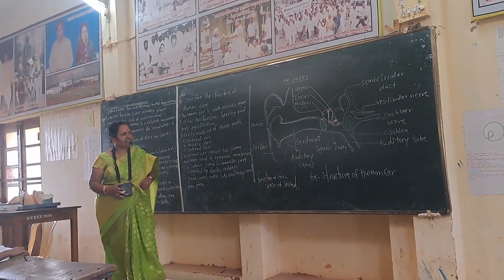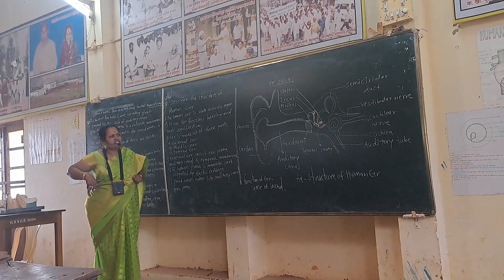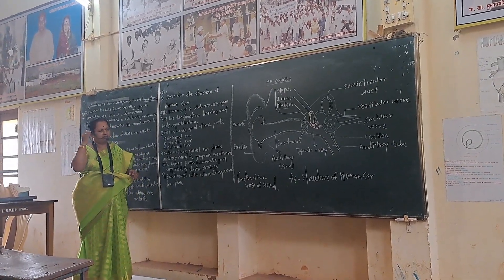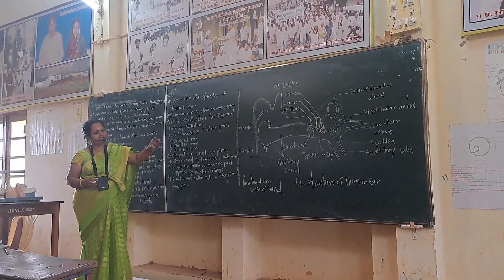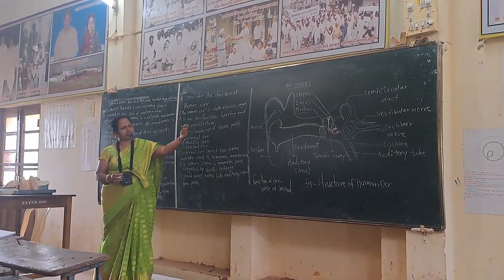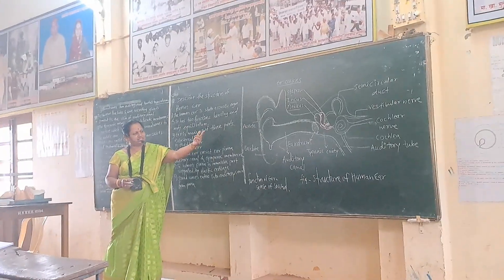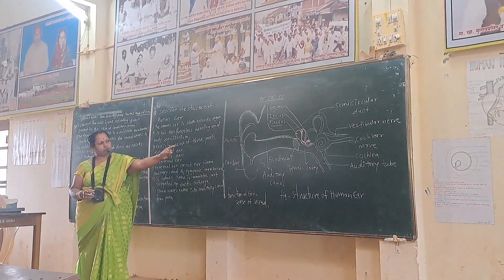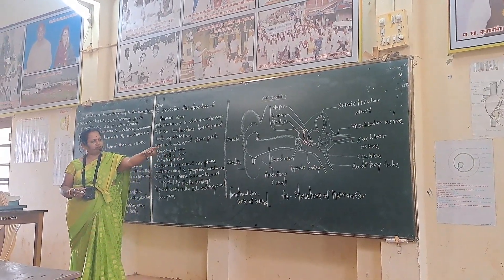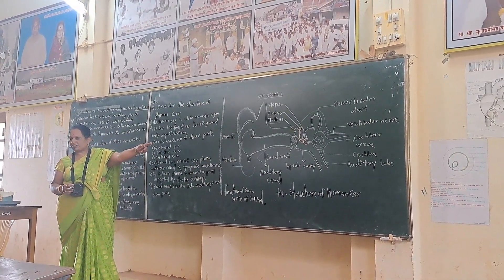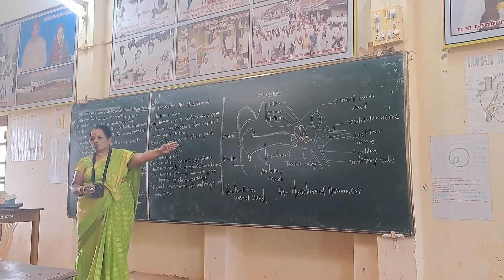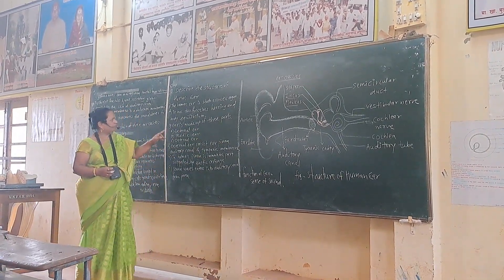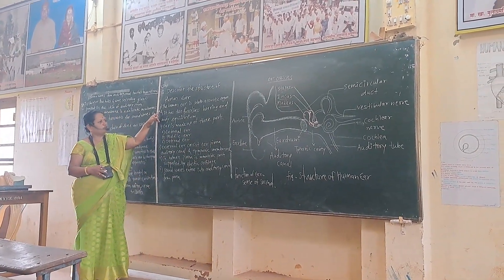The function of the ear is the sense of sound. Sound waves are collected first by the pinna of the external ear, then transported through the auditory canal, where the vibrations reach the ear drum. The ear drum plays an important role in this process.